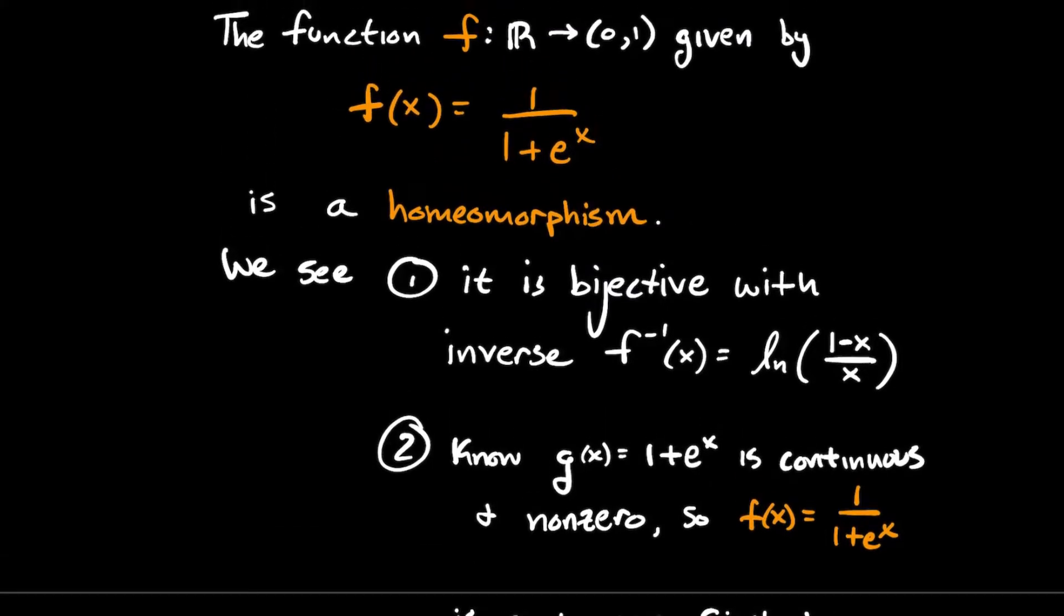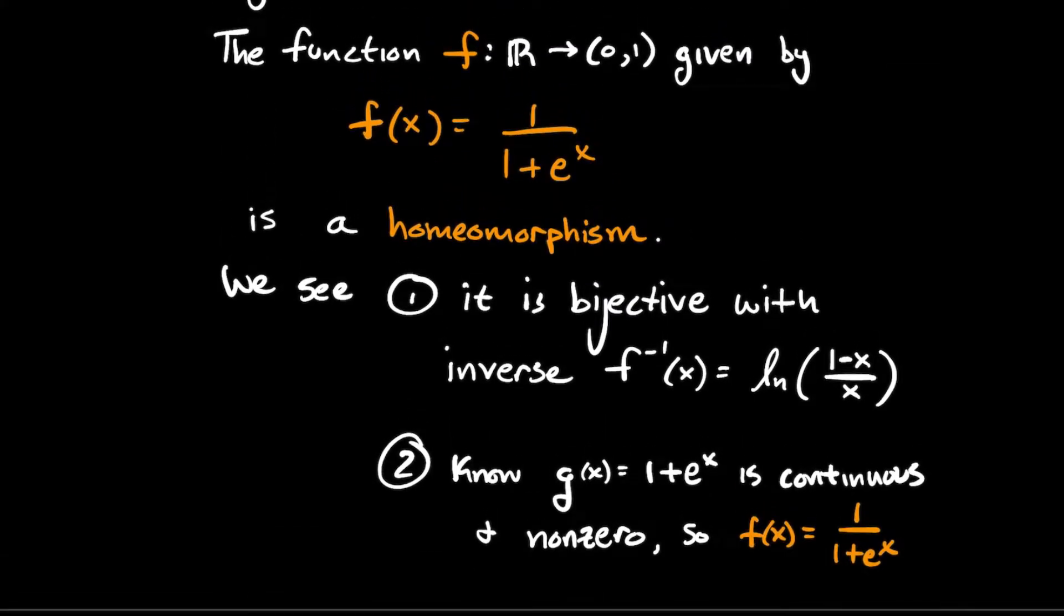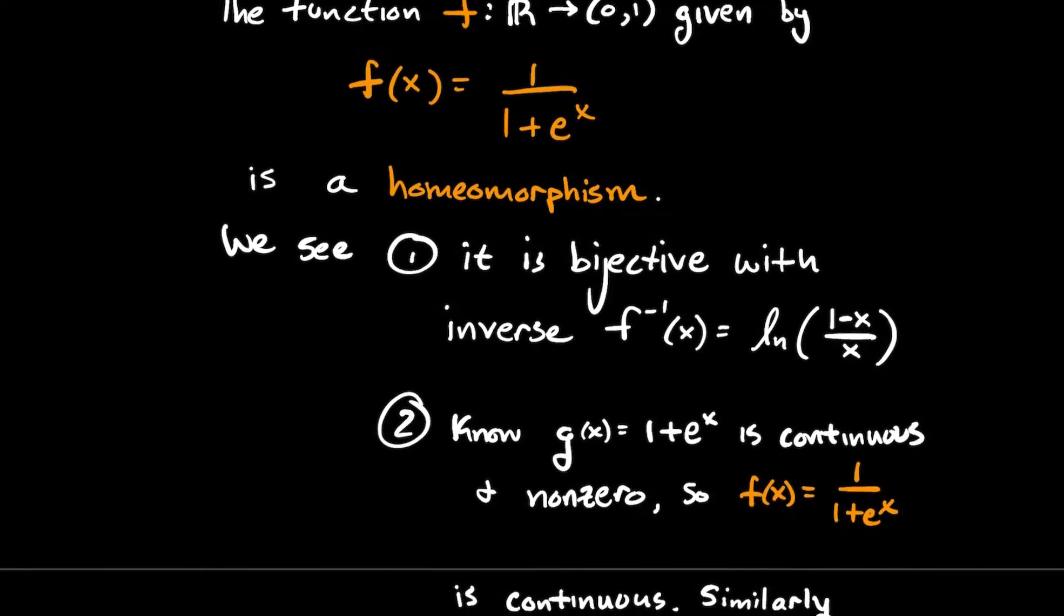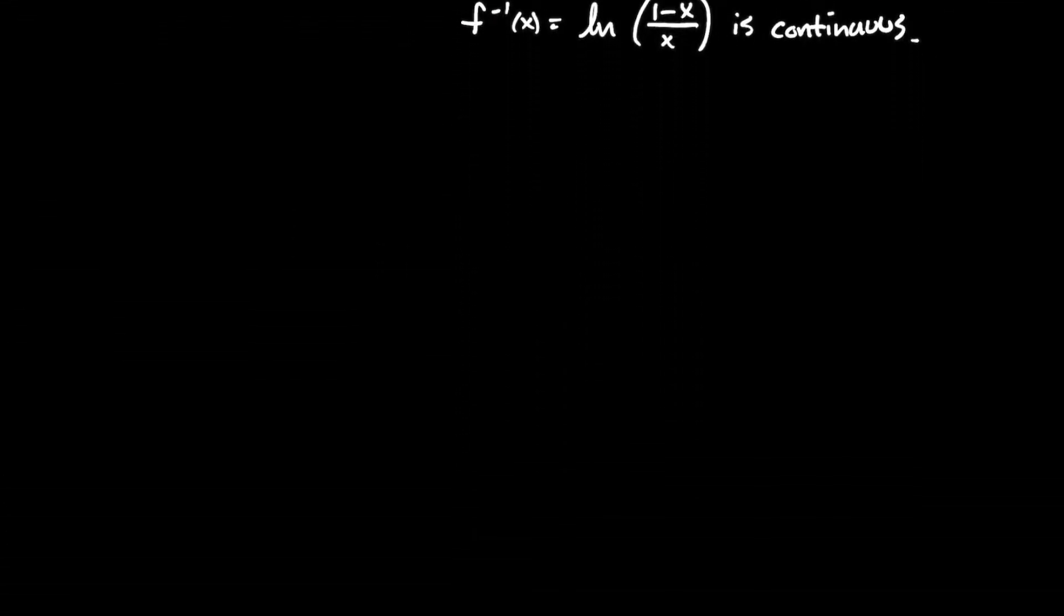You might also recognize this is kind of one of those cool functions that tries to say that there are as many real numbers as there are real numbers between 0 and 1. So those are kind of some of those funny uncountable ideas that kind of blow people's minds unless they're kind of used to thinking about infinity in these ways. Anyway, back to what we're talking about in this video. Back to topology.